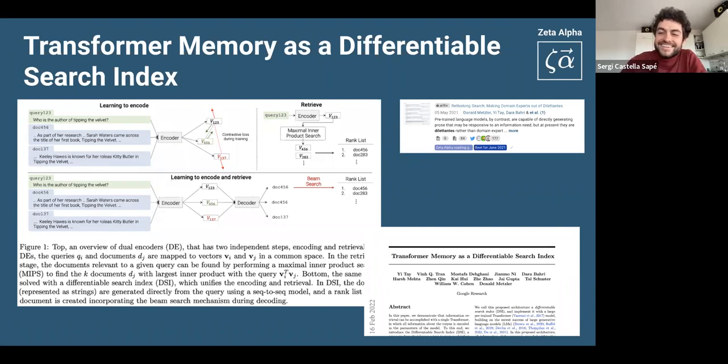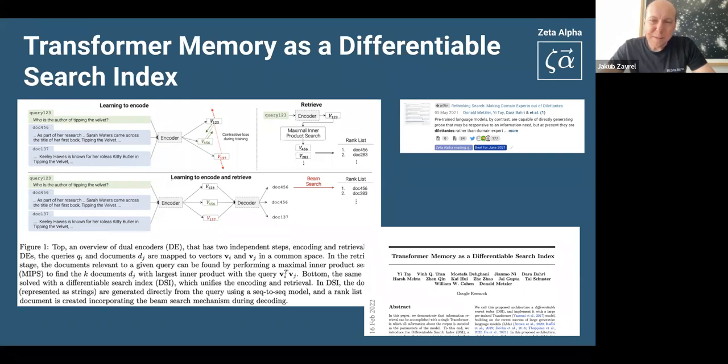So our next paper, transformer memory as a differential search index. I would say personally, this is my favorite from the month. And so much so that we're going to actually have a special episode on this on our upcoming podcast on neural information retrieval. But before that, Jakob, can you give us a quick overview of this? Yeah, this really falls in the category of crazy ideas in my book, but maybe in the category of crazy ideas worth trying. So this paper actually goes, we discussed this idea before in June last year. There was this paper from Donald Metzler and other colleagues at Google, rethinking search, making domain experts out of dilettantes.